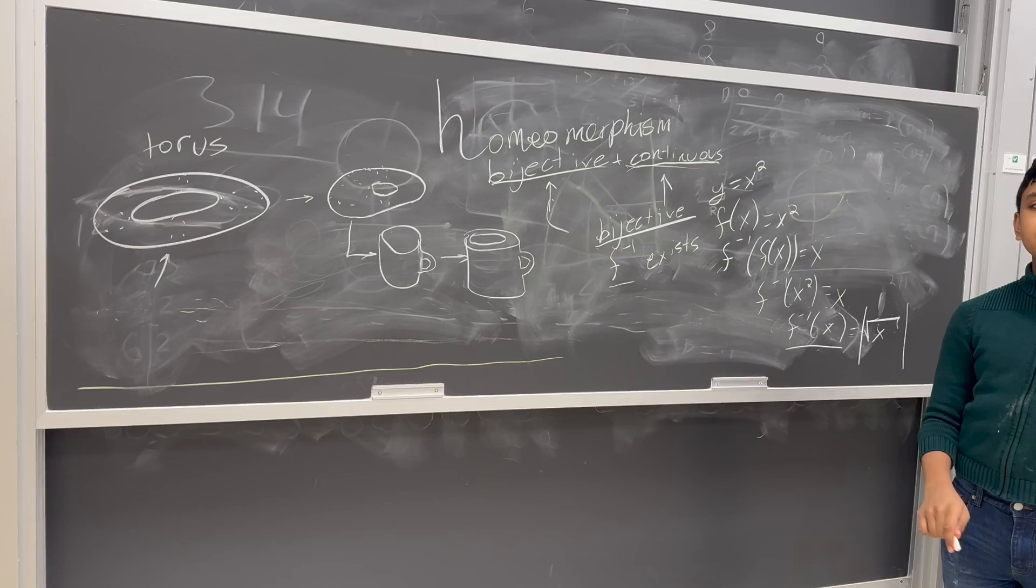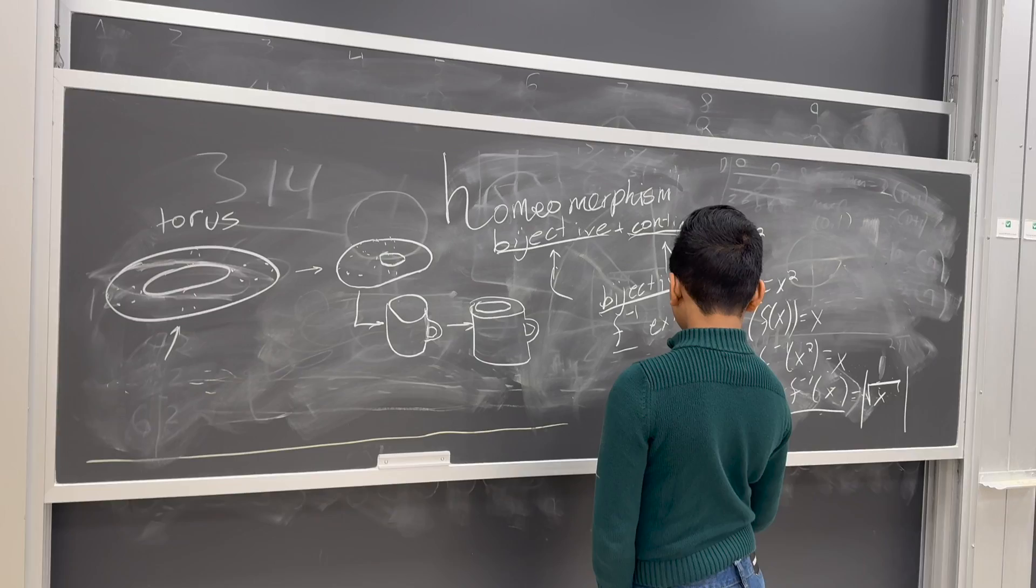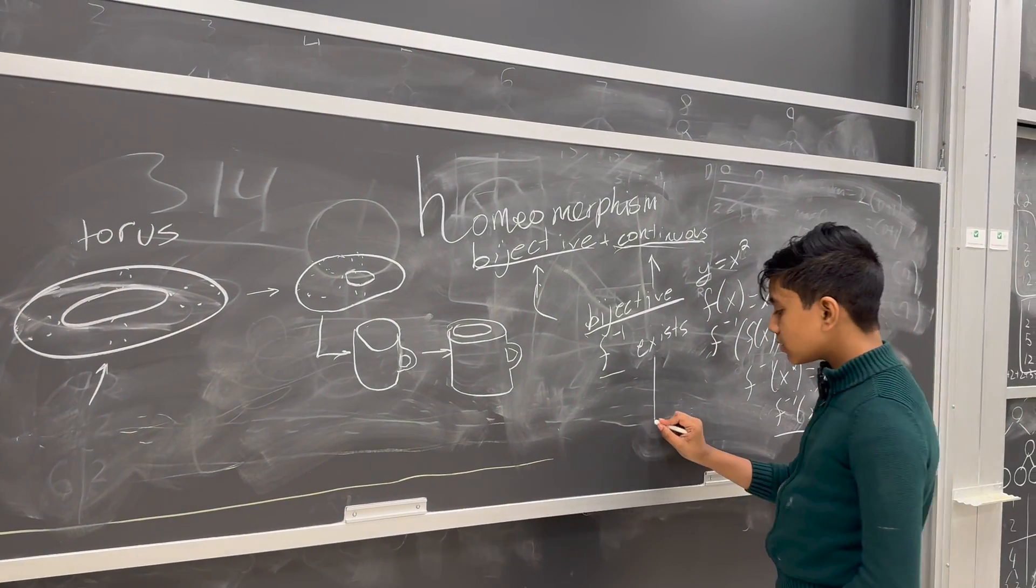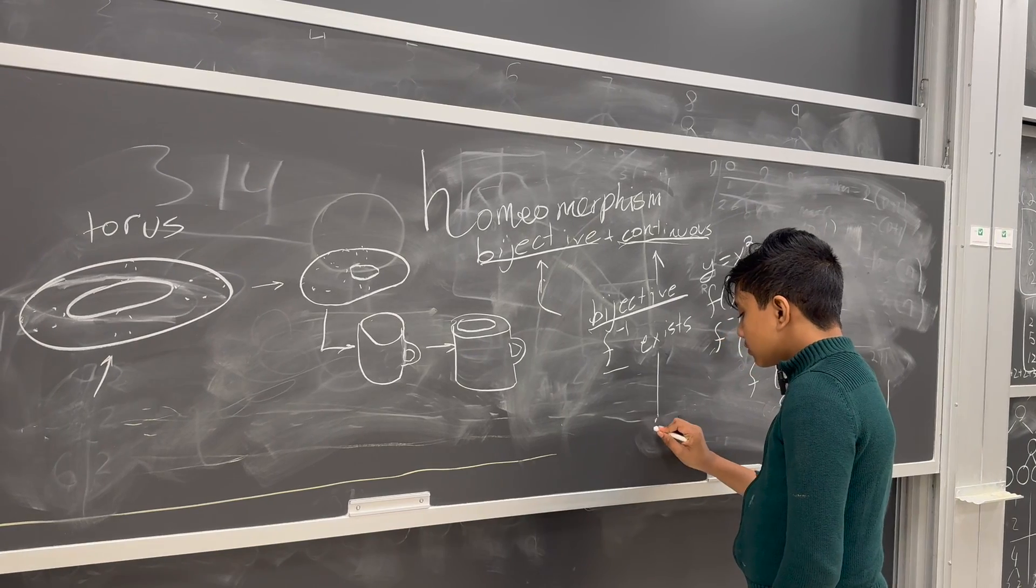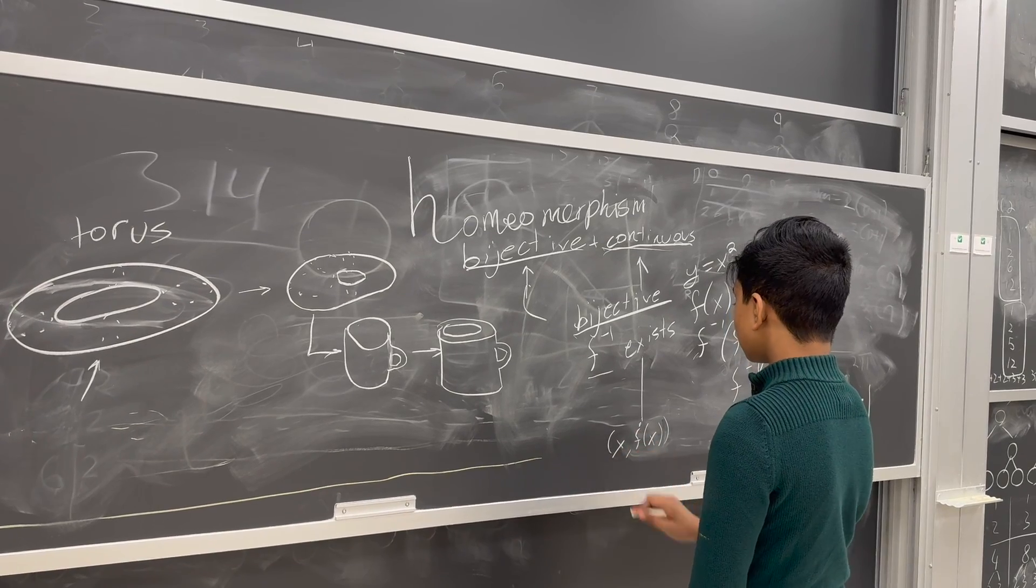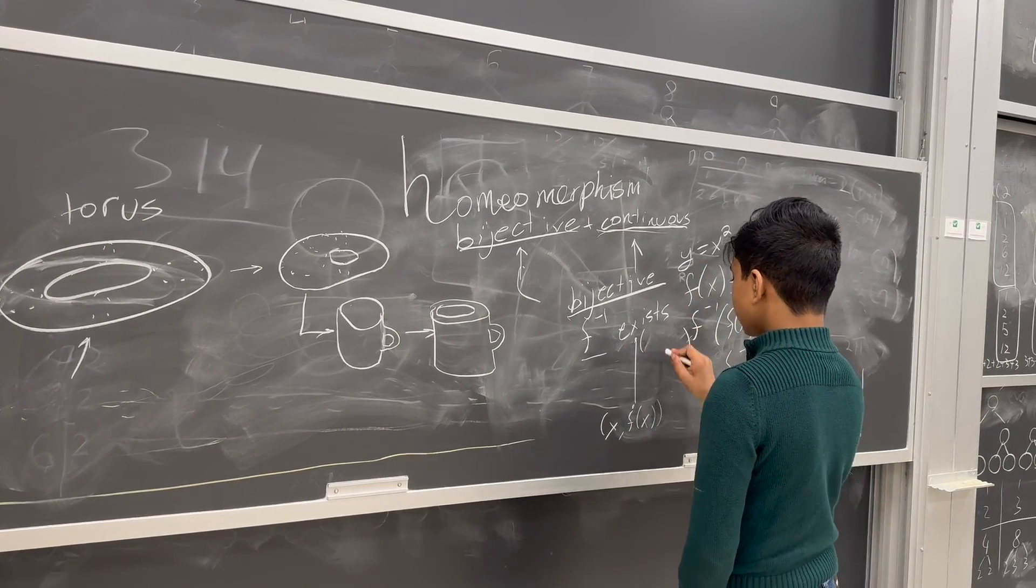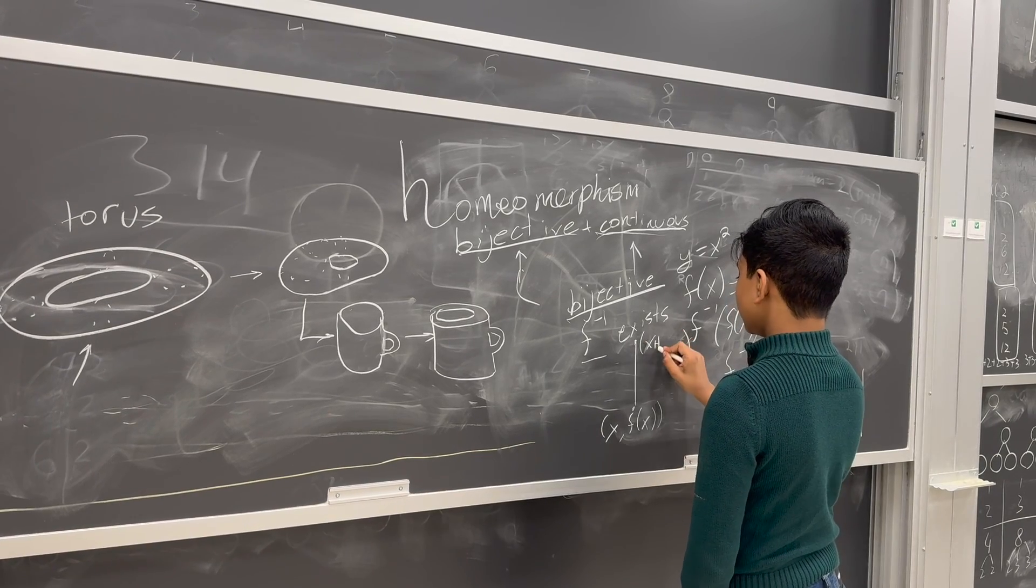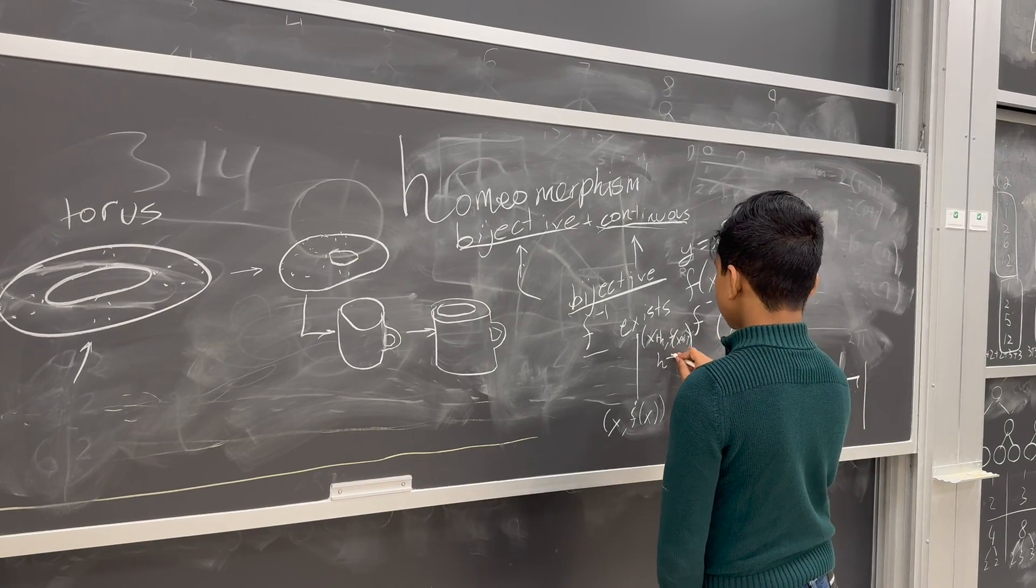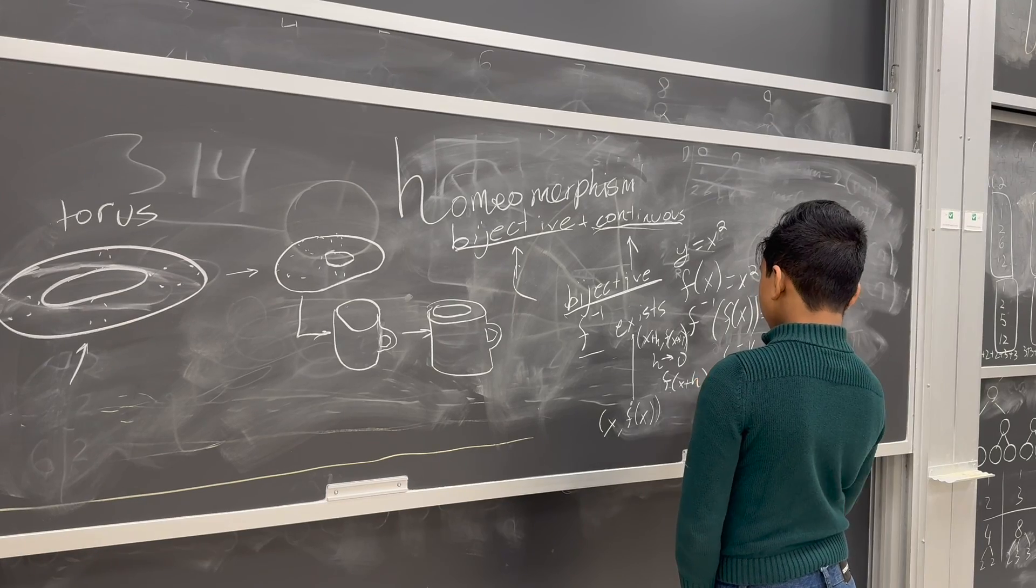Now, what does it mean for a function to be continuous? Well, it essentially means there are no jumps, which basically states that if we have f of x, x comma f of x, right here, and then we have x plus h, f of x plus h, right here. As h approaches 0, f of x plus h should approach to 0.